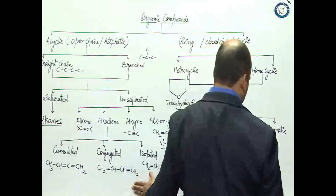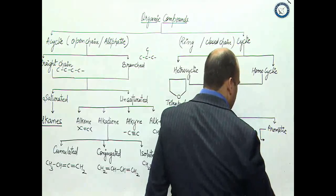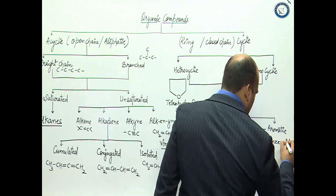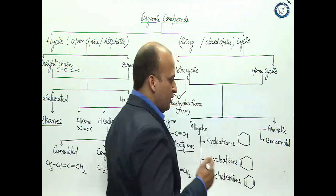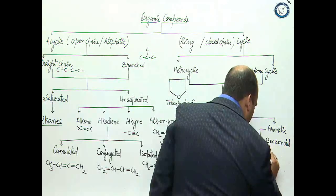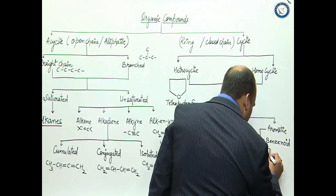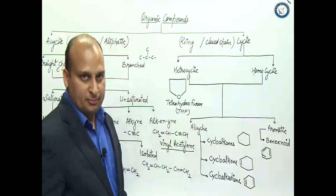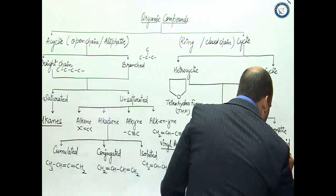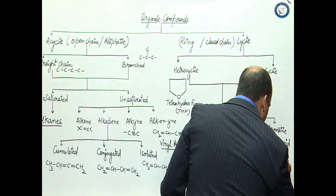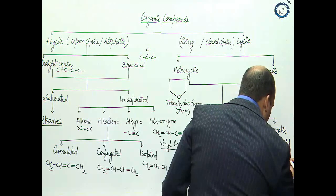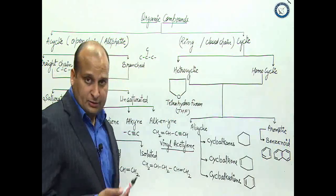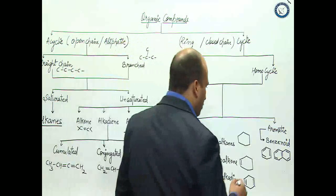When we talk about aromatic compounds, there are two parts: benzenoid and non-benzenoid. For benzenoid, there should be at least one benzene ring. You have to remember that this structure is benzene. At least one such ring must be present for it to be an aromatic benzenoid compound. If I attach two rings here, this is also an aromatic compound and it is benzenoid. It is not necessary that aromatic compounds are always benzenoid - non-benzenoid also exist.